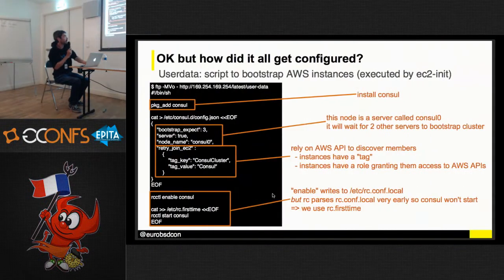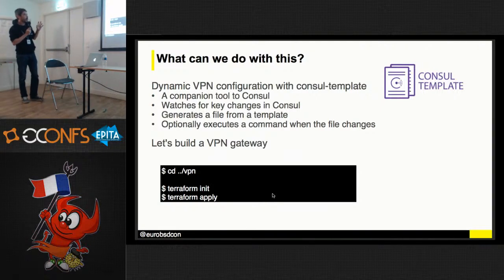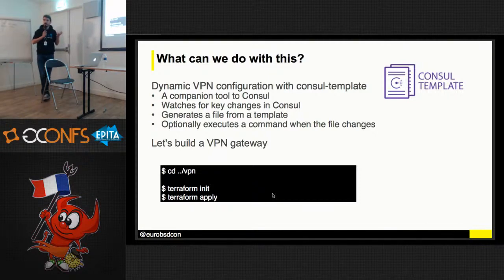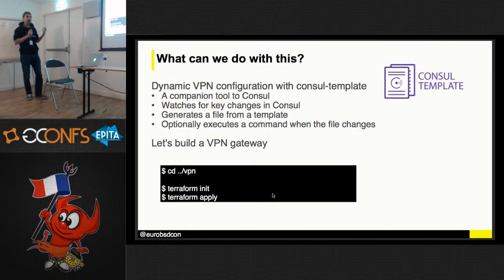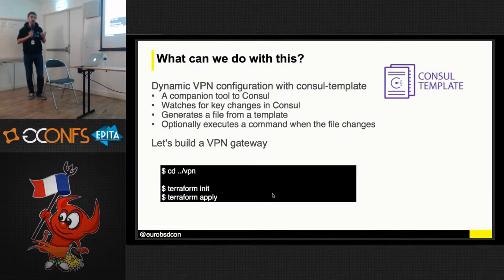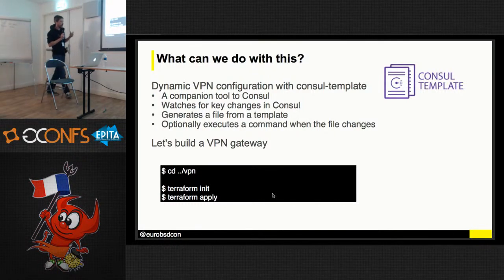Now that we have this Consul cluster, what are we going to do with it? We're going to use a companion tool called Consul Template. What Consul Template does is connect to Consul, watch for keys, and when they change it can generate a file from a template and execute a script — like a configuration reload. We're going to use this to build a dynamic VPN gateway. The goal is to have a generic VPN machine with no configuration, and put the configuration we need — endpoint, pre-shared key, etc. — inside Consul, which will then build the IPsec configuration and start the VPN.